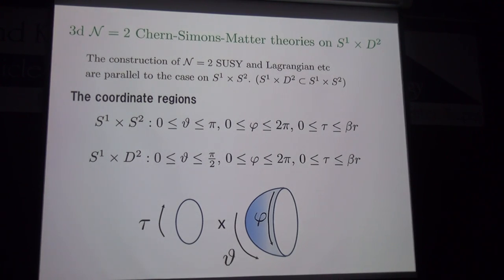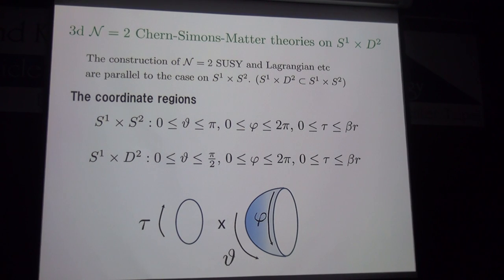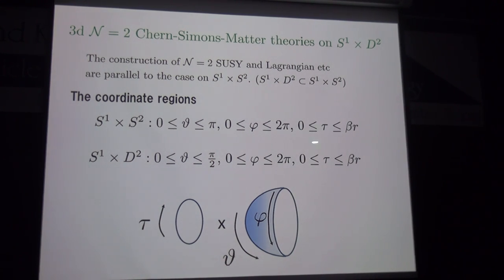This geometry is curved, so construction of a supersymmetric theory is not simple, but by embedding S¹ × hemisphere into S¹ × S², we can construct the supersymmetric theory and its Lagrangian. The coordinate system on S¹ × S² uses polar coordinates: θ runs along one direction, φ along another, and τ denotes the coordinate along the S¹ direction. R is the radius of the hemisphere or S², and the circumference of S¹ is β = 2πR.